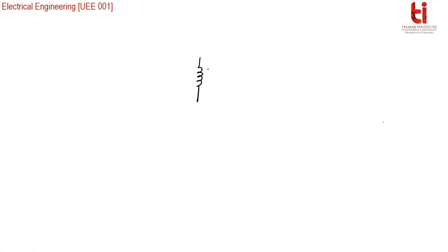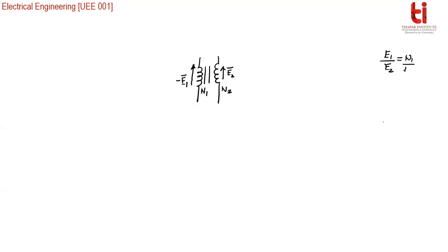In the last class, we had studied how to make the exact equivalent circuit. We start with an ideal transformer. This is the symbol of an ideal transformer. If the number of turns is N1 and the other winding has number of turns N2, the first winding induced EMF is shown as E1 and the other winding induced EMF is shown as E2. So ideal transformer simply means that E1 by E2 is equal to N1 by N2.